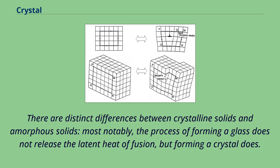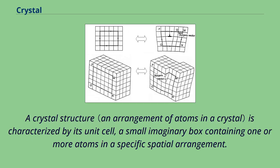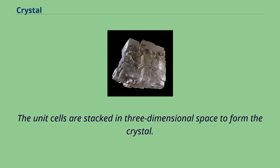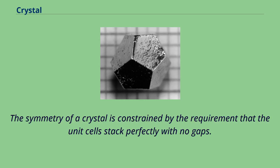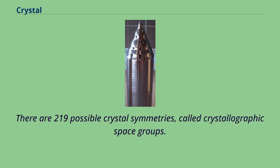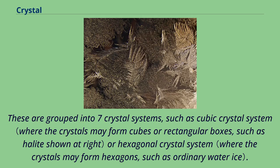A crystal structure is characterized by its unit cell, a small imaginary box containing one or more atoms in a specific spatial arrangement. The unit cells are stacked in three-dimensional space to form the crystal. The symmetry of a crystal is constrained by the requirement that the unit cells stack perfectly with no gaps. There are 219 possible crystal symmetries, called crystallographic space groups, grouped into seven crystal systems, such as the cubic crystal system or hexagonal crystal system.